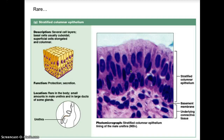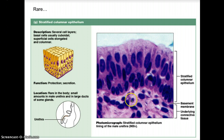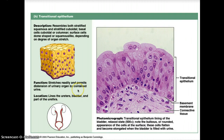Stratified columnar epithelium is also a rare tissue type. It is several cell layers thick. Basal cells are usually cuboidal, and superficial cells are elongated and columnar. Its functions are for protection and secretion. Rare in the body, it's found in small amounts in the male urethra and in large ducts of salivary glands. Here you can see these stratified columnar epithelial cells — they are elongated — and here we have that basement membrane and the underlying connective tissue.